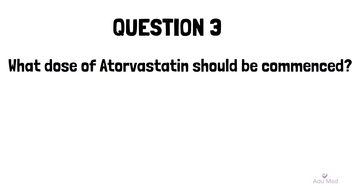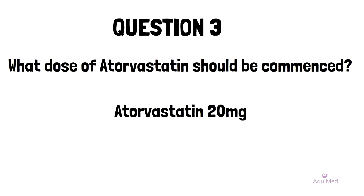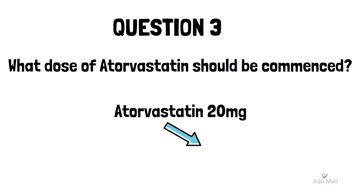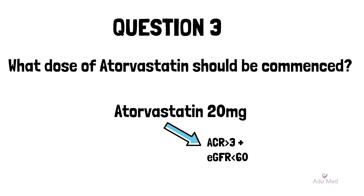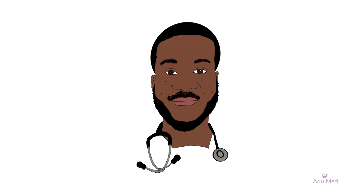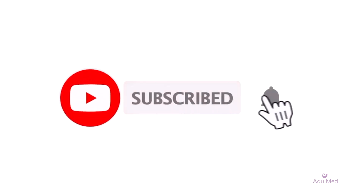Moving on to our last question, question three: what dose of atorvastatin would you commence in this patient? Statins should be offered to all patients with CKD. Current guidance states that the dose should be kept at atorvastatin 20 milligrams if there is CKD with an ACR of three or more plus an eGFR of less than 60. These conditions apply in this case, so the answer would be atorvastatin 20 milligrams. Make sure you check out our renal playlist if you struggle with any of these questions, as there is a lot more detail about the theory relating to this curriculum area. Don't forget to like and subscribe if you found this helpful, and I'll see you soon.